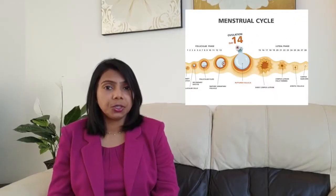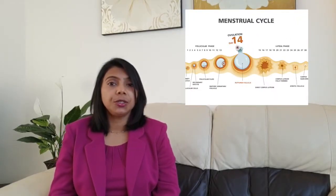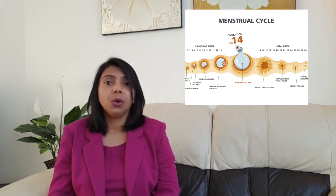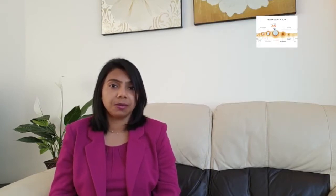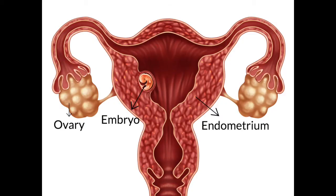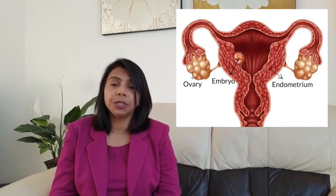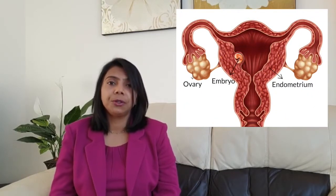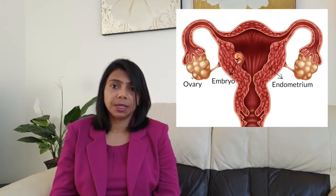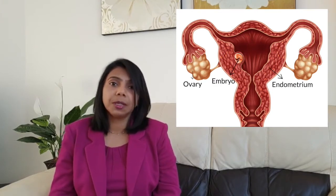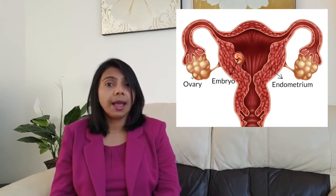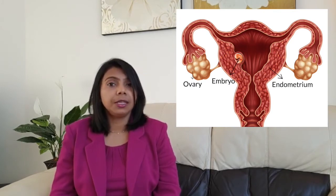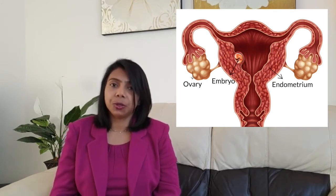After ovulation, the ruptured follicle changes into corpus luteum, which produces a hormone called progesterone. Progesterone prepares the uterus for implantation and pregnancy. If there is no pregnancy, then corpus luteum regresses and progesterone level falls. Since progesterone supports the lining of the uterus, as the level falls, the lining is shed and menstrual bleeding starts.